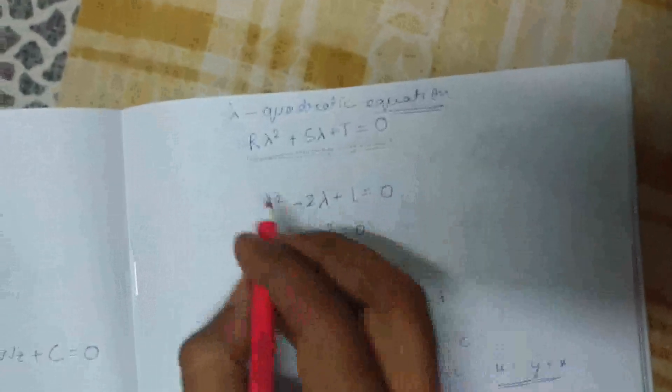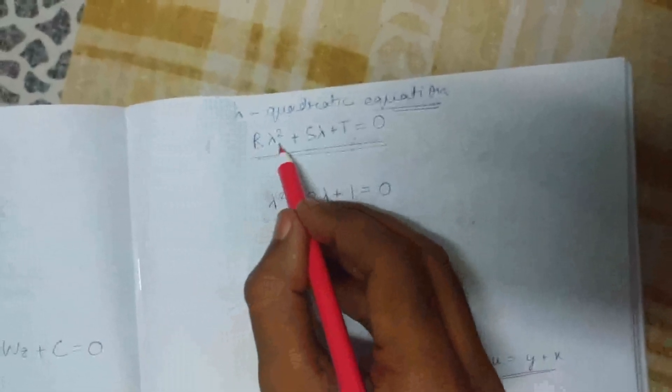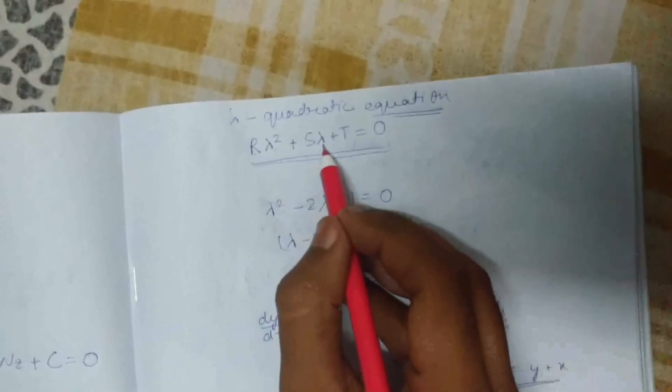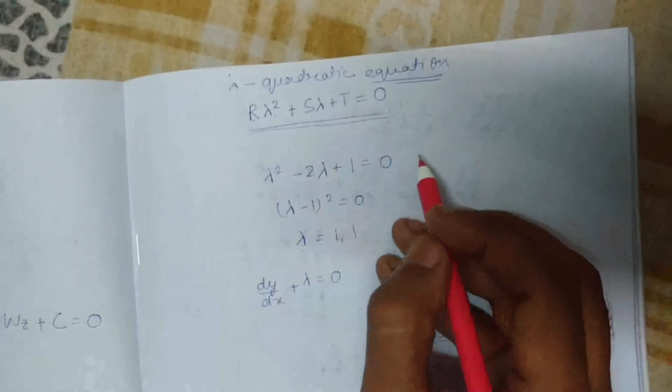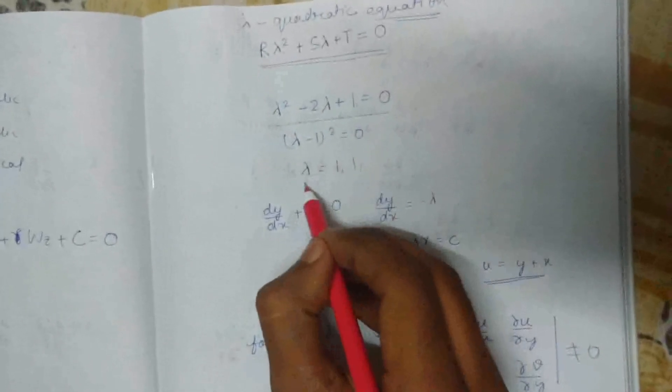Now we're going to find the lambda quadratic equation, which is this. This equation is called lambda quadratic equation. R is taken from the equation we get. Lambda is the replacement of R lambda square, and lambda is the replacement of small s. Small t is replaced by zero and other terms are neglected. Here we put the values of R, S, and T and get this equation.